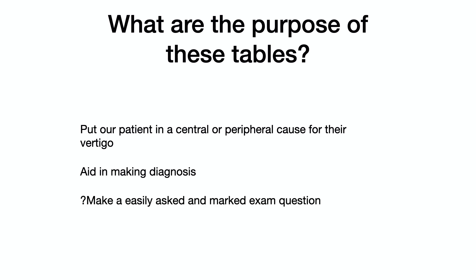The cynic in me wonders if these tables are so popular because they can be easily turned into an exam question for learners: 'Please write down the characteristics of central vertigo versus peripheral vertigo, two points for each correct answer.' Sadly, few of the answers would be factually correct.